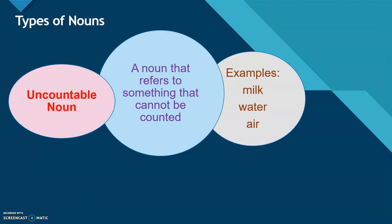Then we have uncountable noun. A noun that refers to something that cannot be counted. For example: milk. Of course, we cannot count milk. Water. Air.